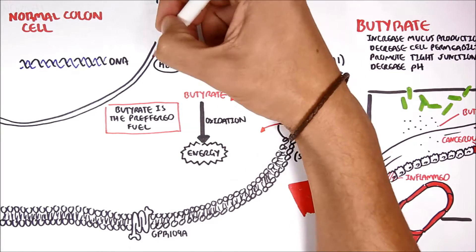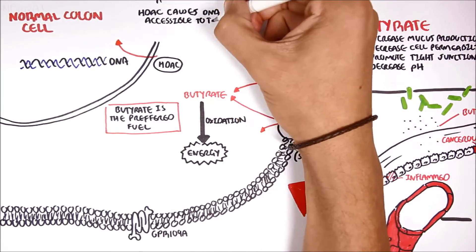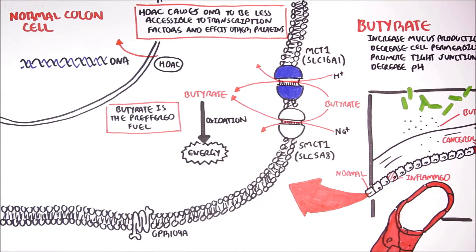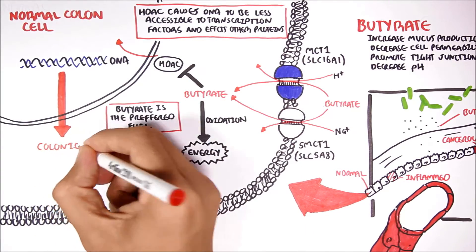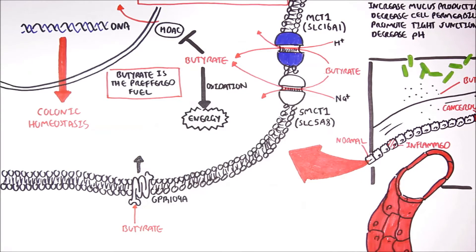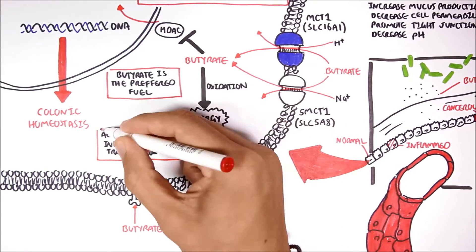Within cells, there is an enzyme called histone deacetylase or HDAC. What HDAC does is that it causes DNA to be less accessible to transcription factors and also affects other proteins by removing acetyl groups from them. And therefore, you can think of HDAC as an enzyme that suppresses genes and proteins. Butyrate has been shown to be an inhibitor of HDAC. Through this function, butyrate helps maintain colon homeostasis. Butyrate can also bind onto the G-protein receptor 109A, which can cause activation or inhibition of certain transcription factors. And we will look into this as we move through the video.